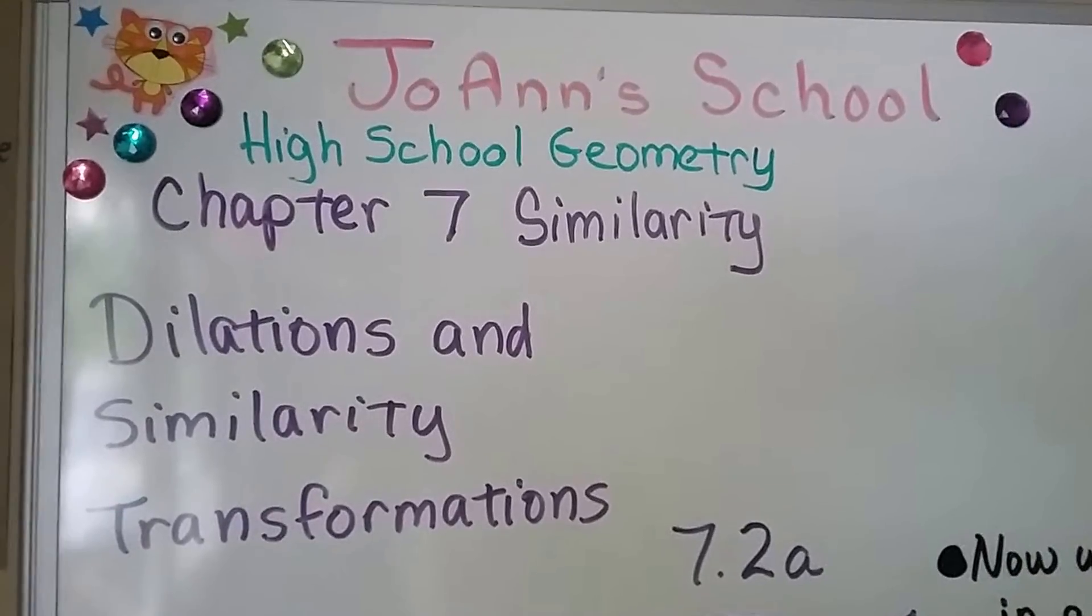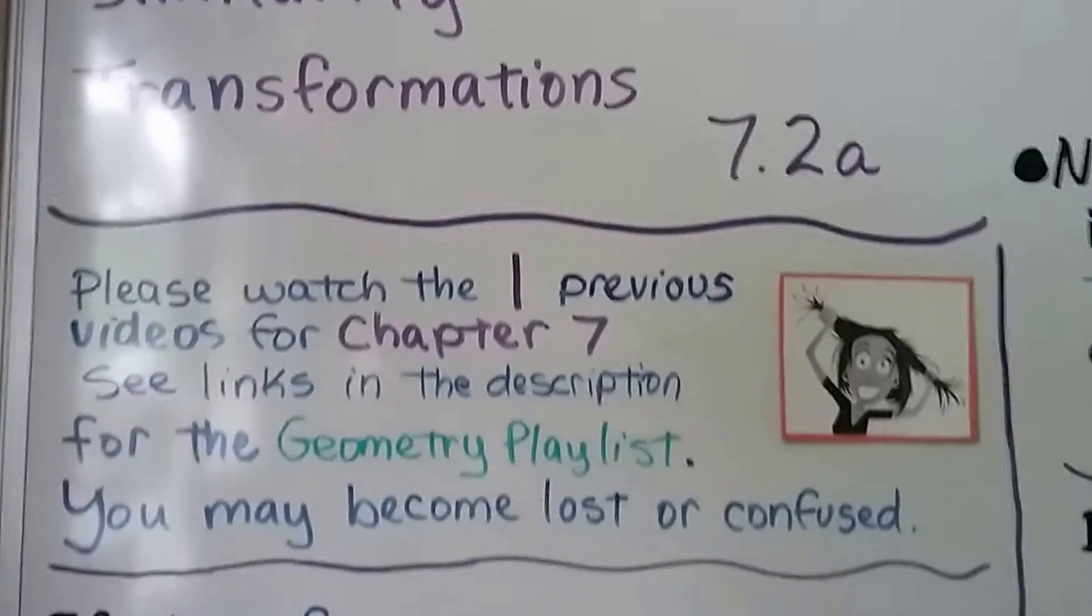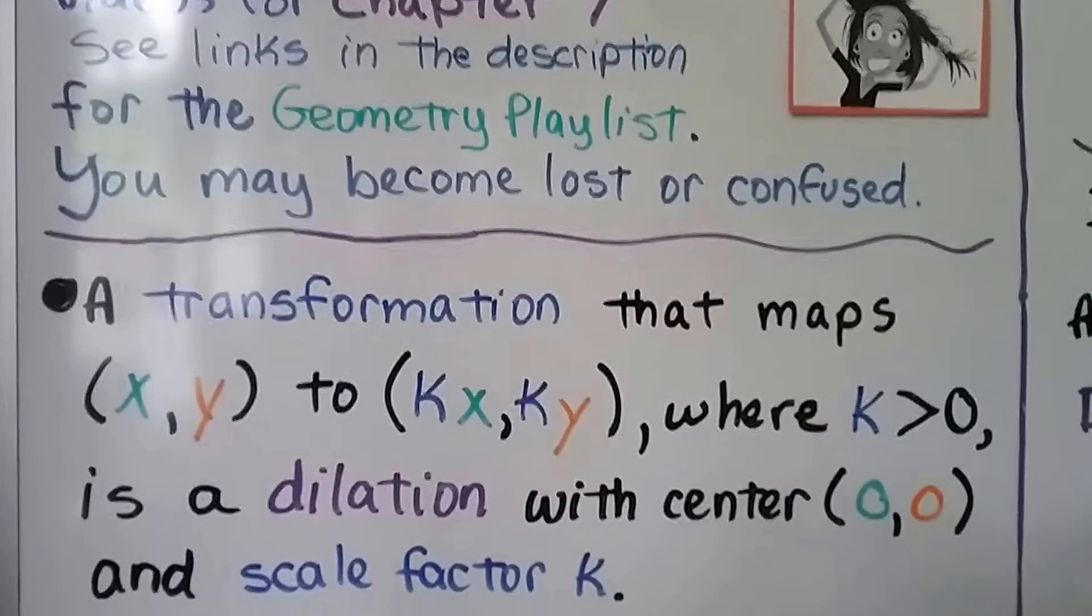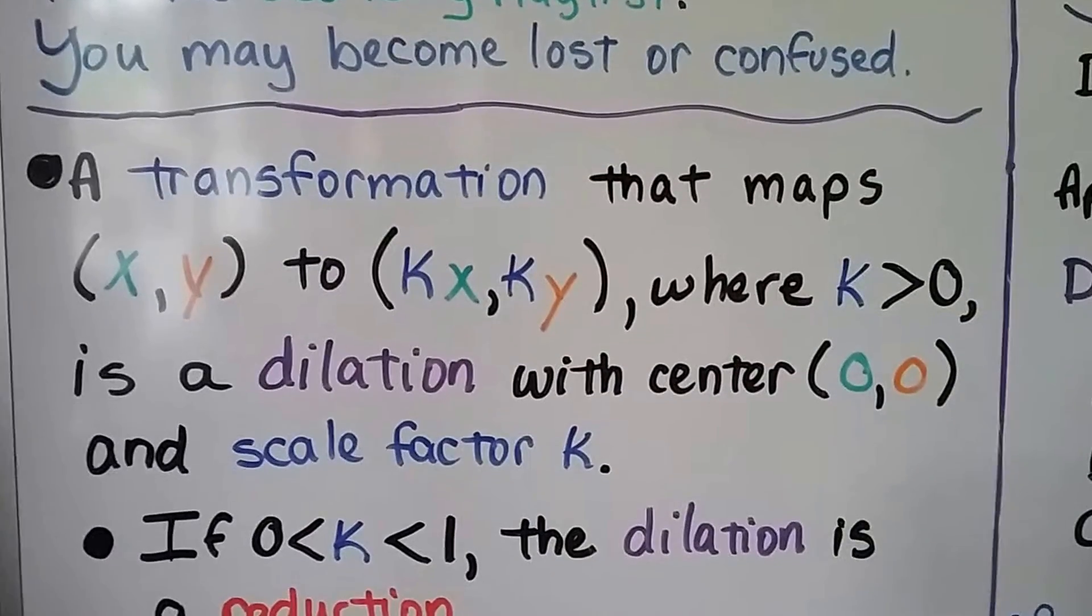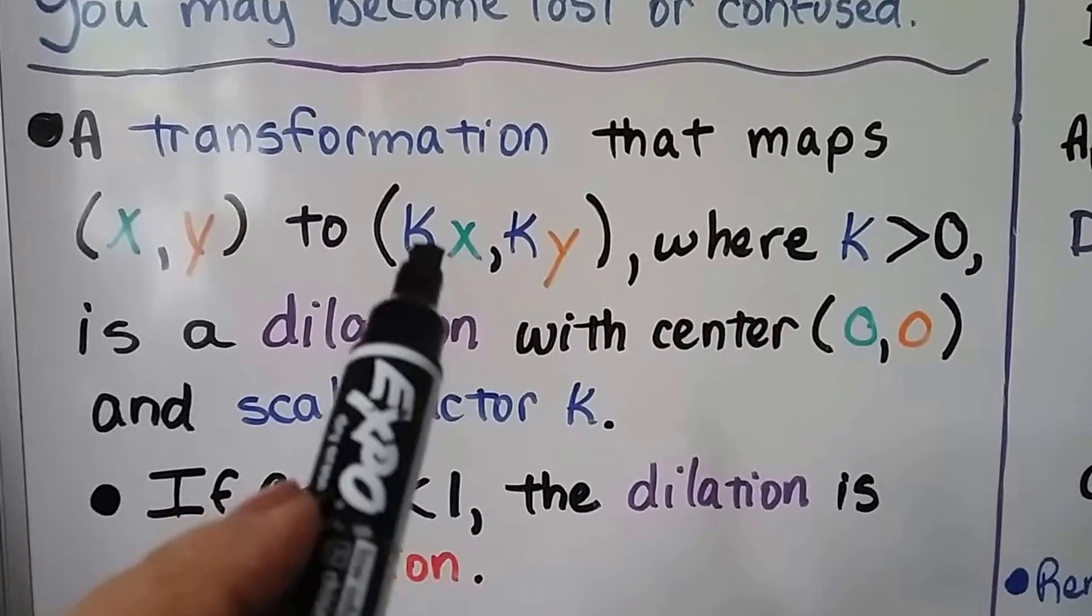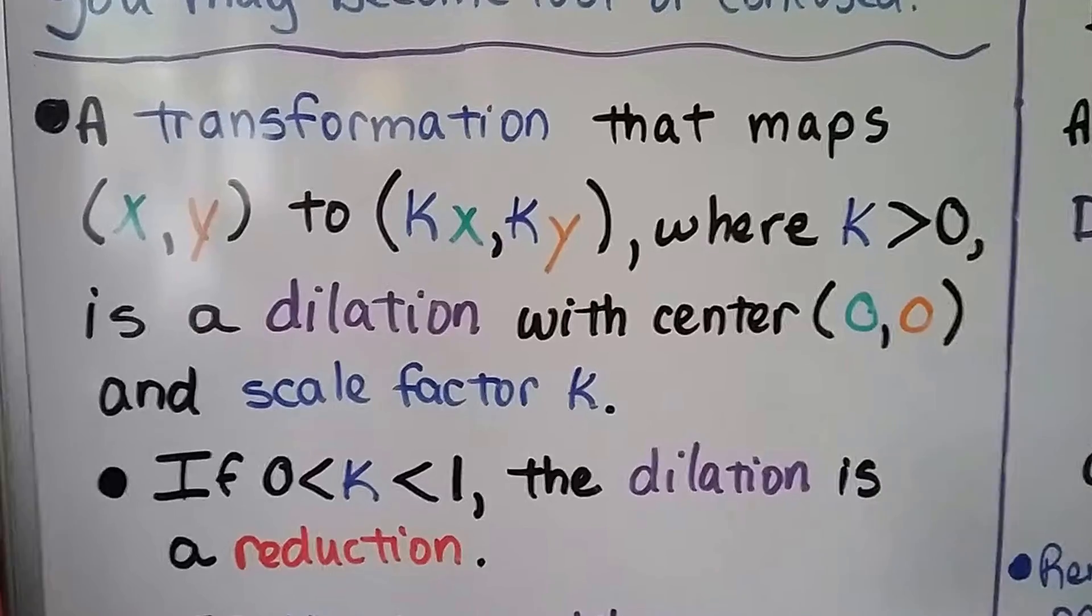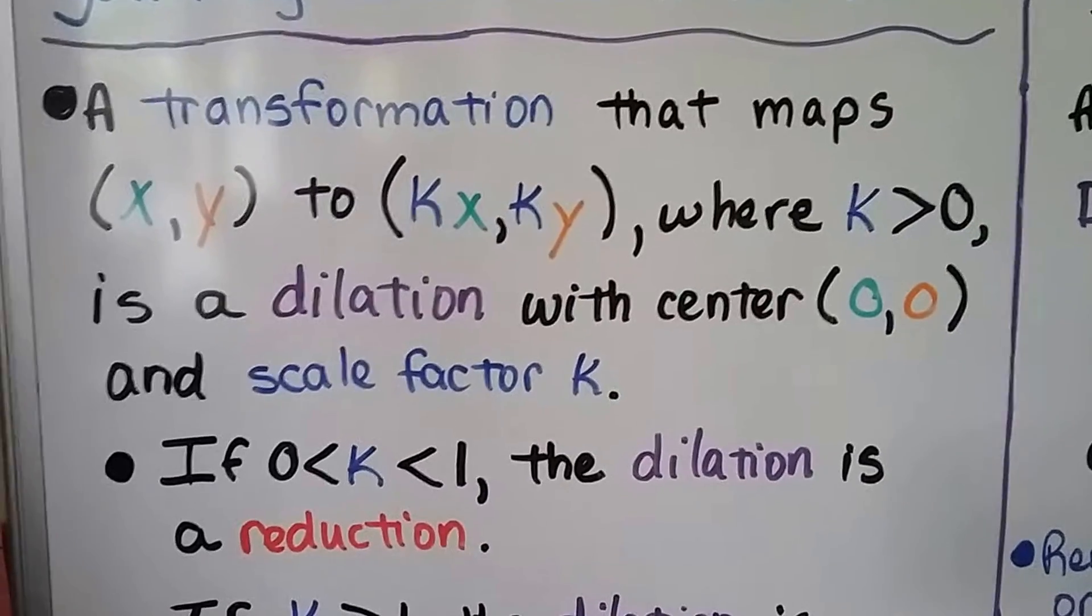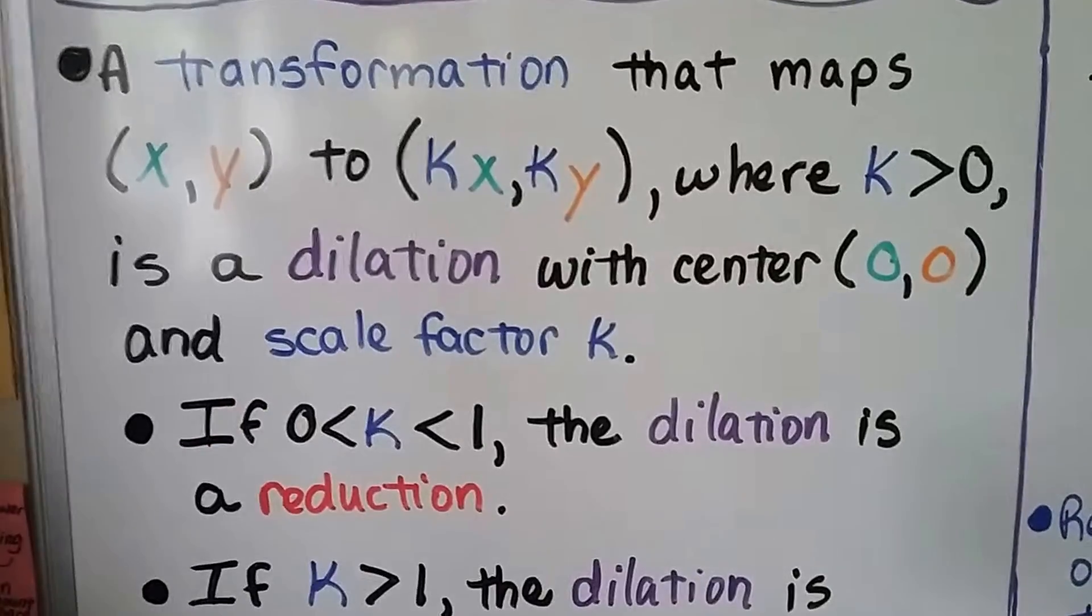Dilations and similarity transformations. We're at 7.2a with one previous video for the chapter so far. A transformation that maps (x,y) to (kx,ky), so we're going to be multiplying x and y by whatever the value that k is, where k is greater than 0. That's a dilation with center (0,0), the origin, and our scale factor is k.